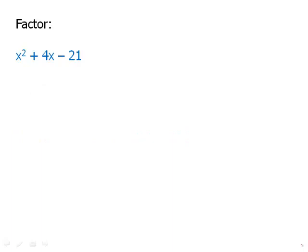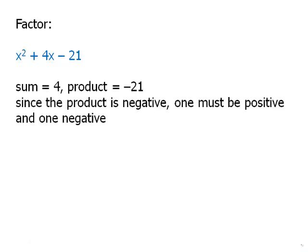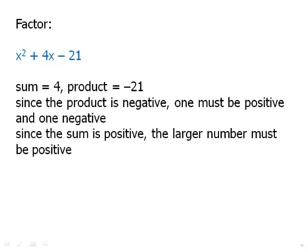This one's a little trickier. We have a negative sign. So here we're looking for a sum of positive 4 and a product of negative 21. Let's think about this. Since the product is negative, one of the two numbers must be positive and one is negative.